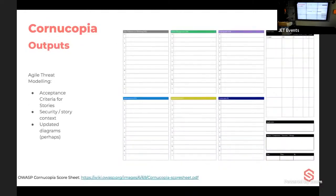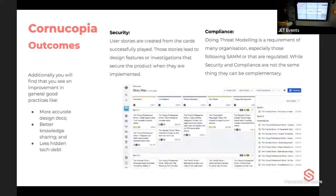The scoresheet is available as a free download. The real outcomes of playing Cornucopia are more accurate design documents, security-aware stories, and developers who understand what can go wrong with what they're about to build. That understanding is critical — if developers know why something can go wrong, they'll make sure it doesn't.